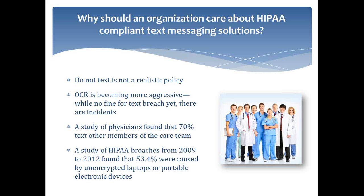We've certainly seen the Office of Civil Rights stepping up its enforcement actions over the past five to six years, becoming very aggressive. There haven't been any big public violations regarding cell phones, although we are aware of organizations that have had breaches through text messaging. An interesting study found that over 50% of HIPAA breaches are now happening from mobile or untethered devices. Organizations need to become more sophisticated, become proactive, give their providers a solution they want to use with good usability, while ensuring HIPAA compliance and lowering their OCR fine risk.